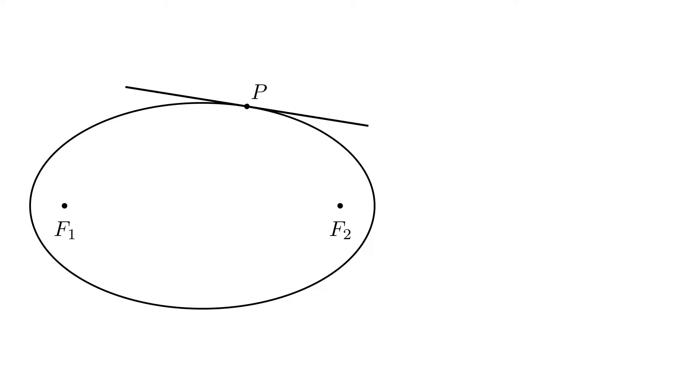To show that the ray of light from f1 after reflection at p goes through f2, we need to show that the angle between the tangent and f1p is equal to the angle between the tangent and f2p.